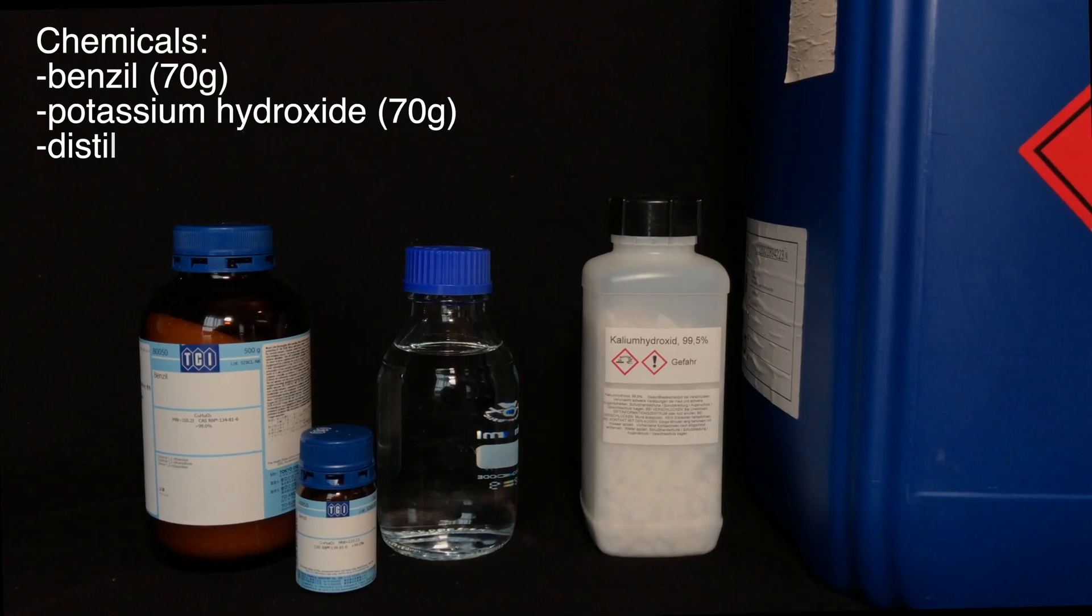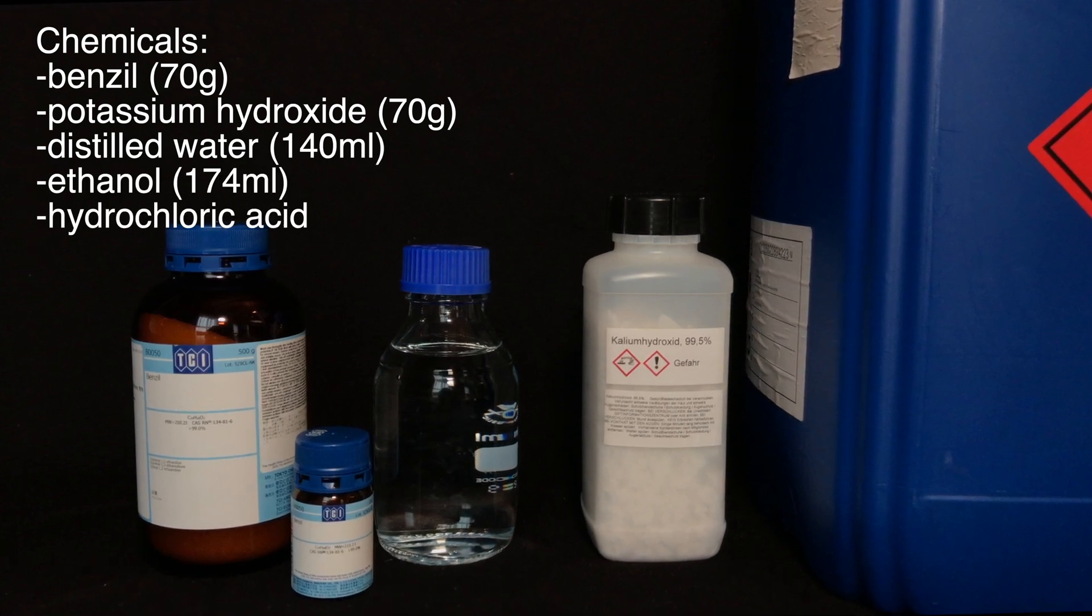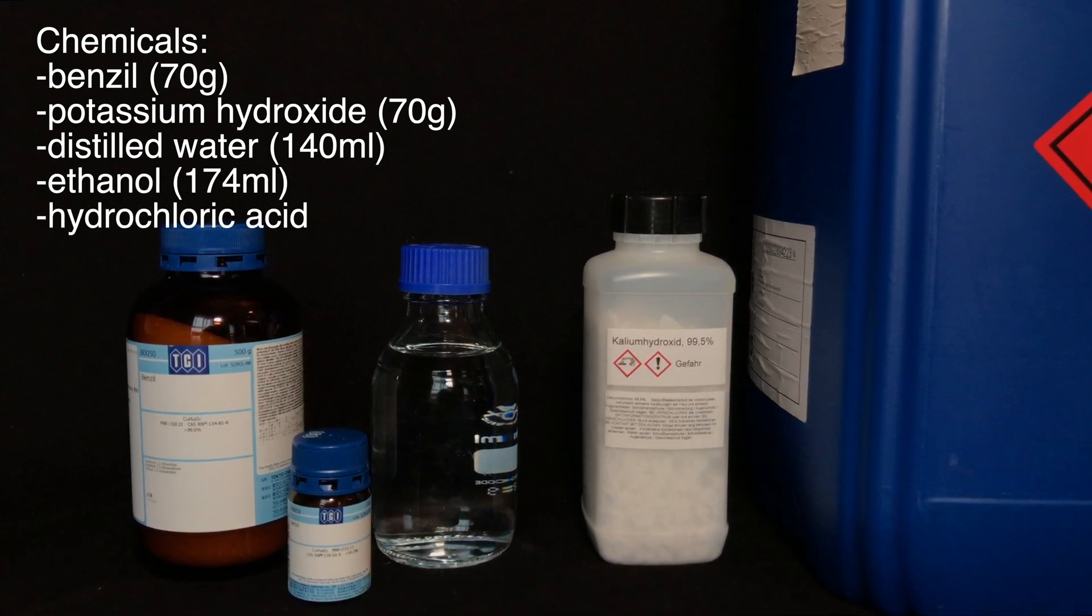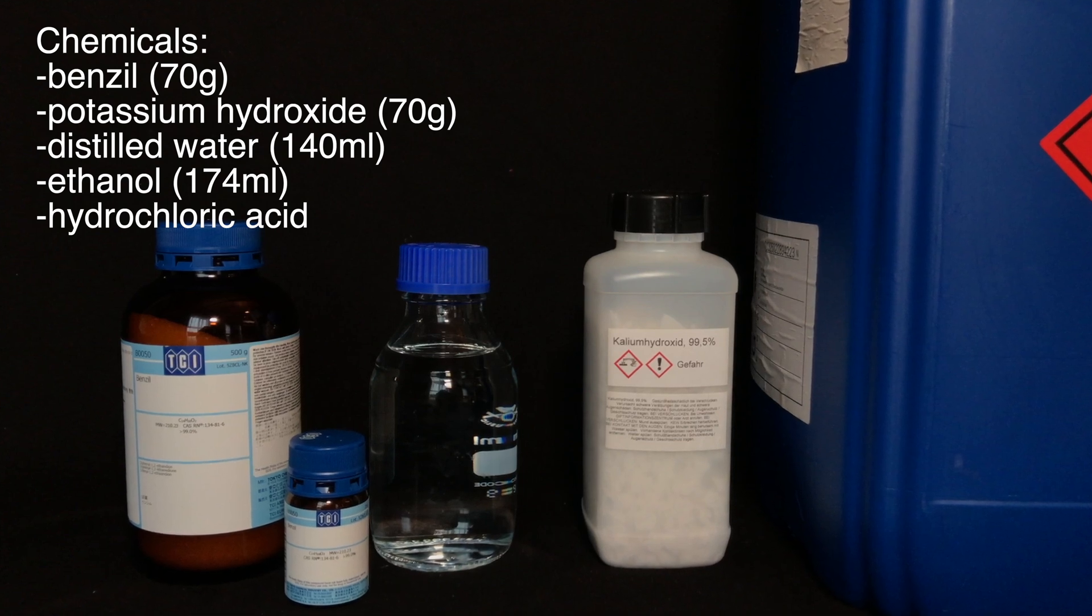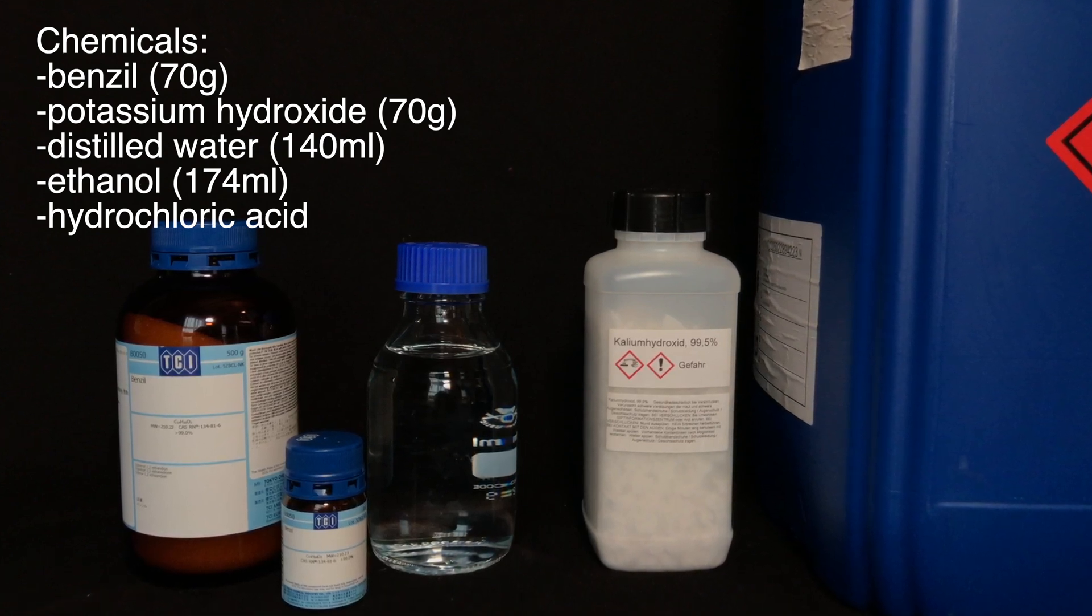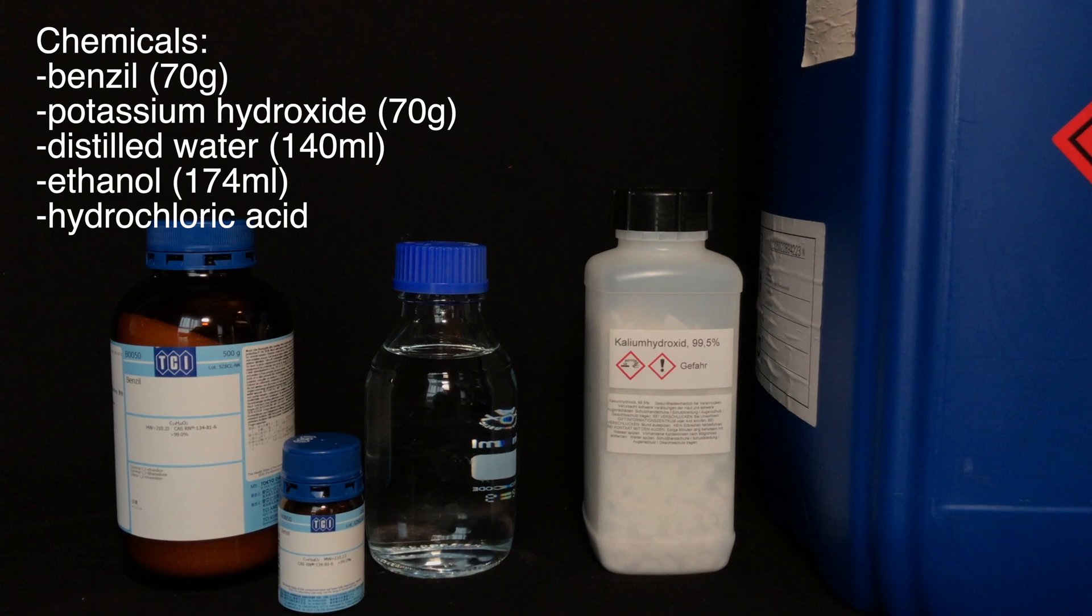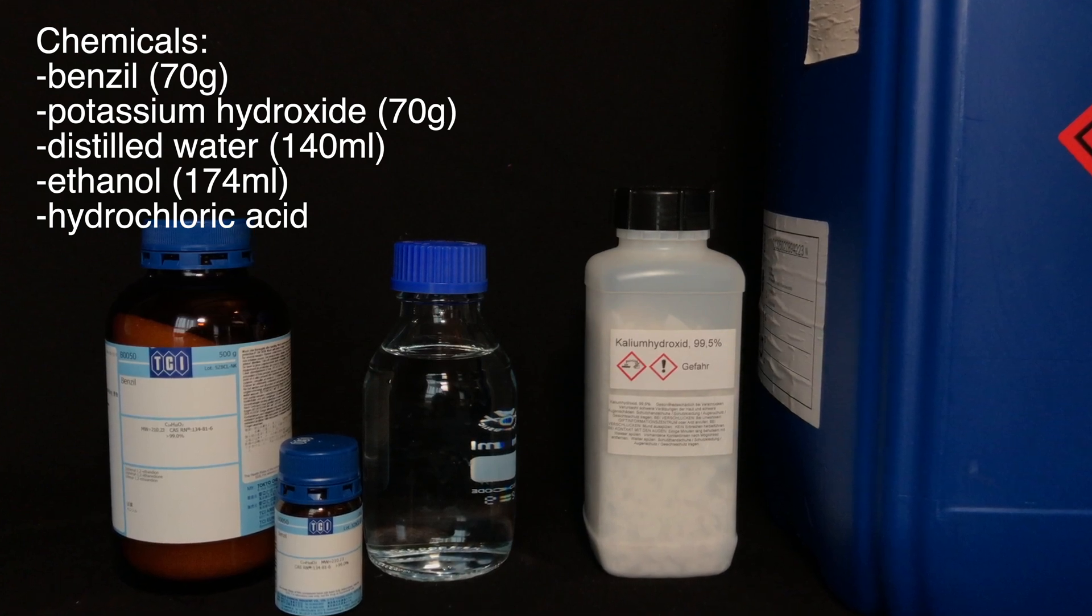For the classic synthesis of benzoic acid you're going to need 70 grams of benzil, 70 grams of potassium hydroxide, 140 milliliters of distilled water, and 174 milliliters of ethanol. We're also going to need hydrochloric acid.